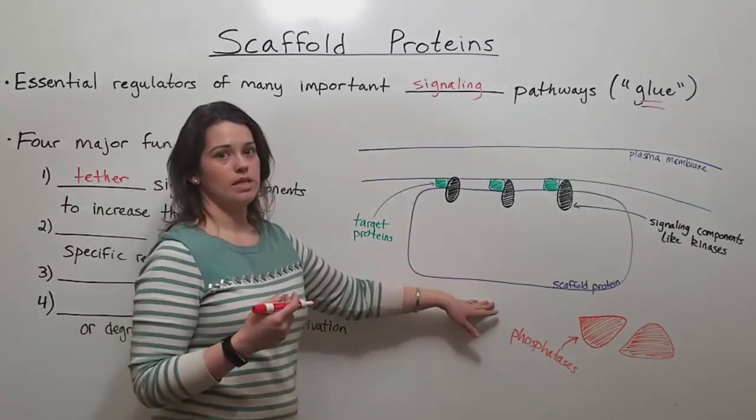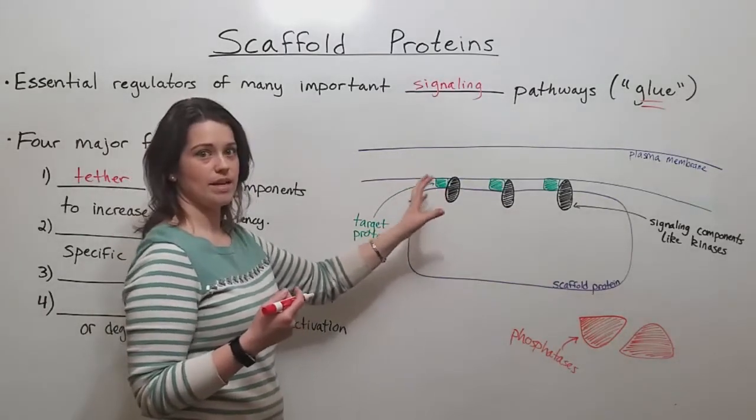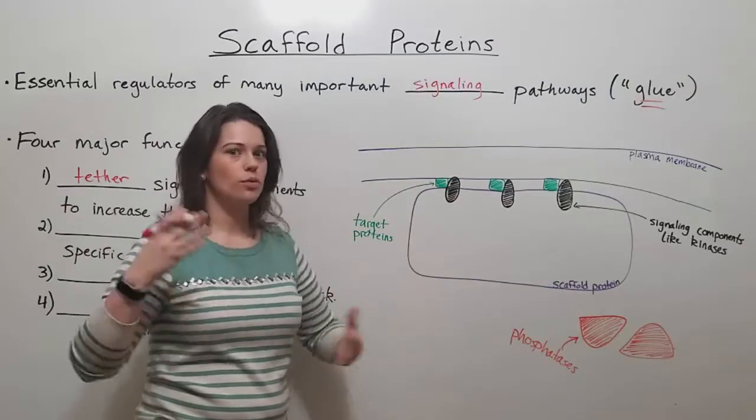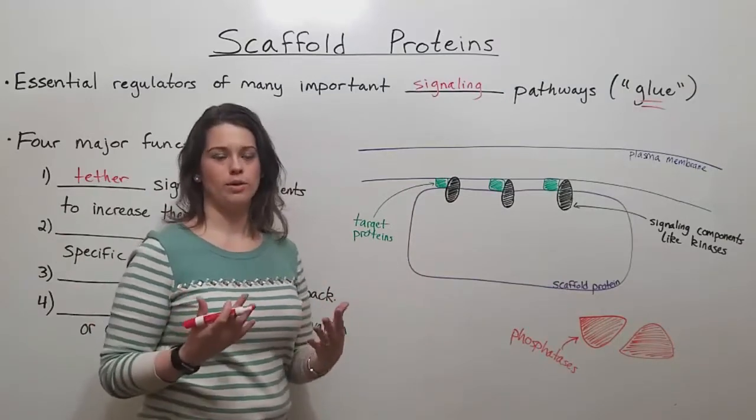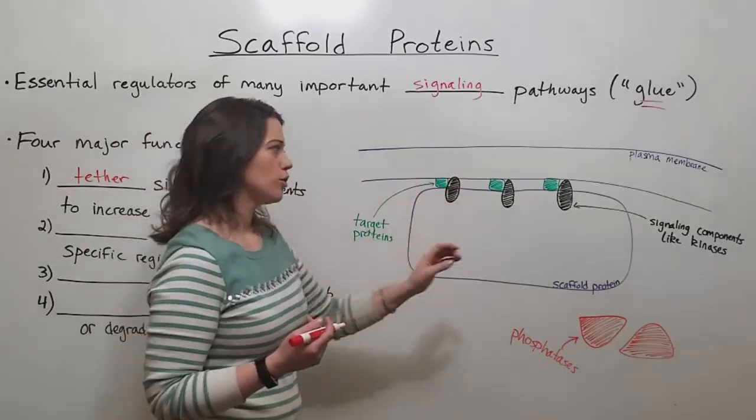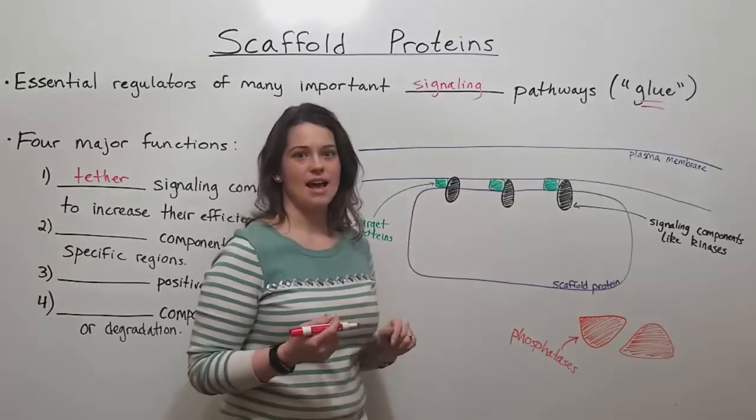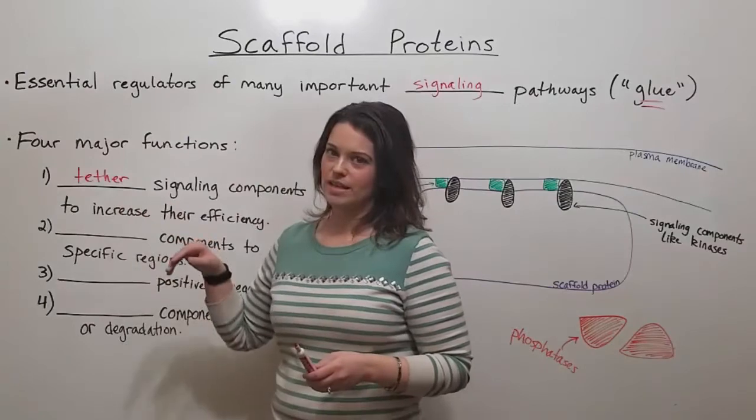Without the scaffold protein holding these kinases in close proximity to their target proteins, the kinases might have to move through the entire cell looking for their target protein. The scaffold protein holds them together so that as soon as the kinases are activated, they can activate the downstream target protein. That's an example of the tethering function.